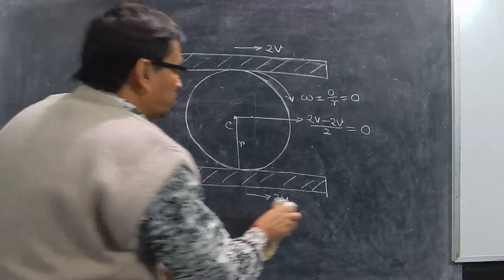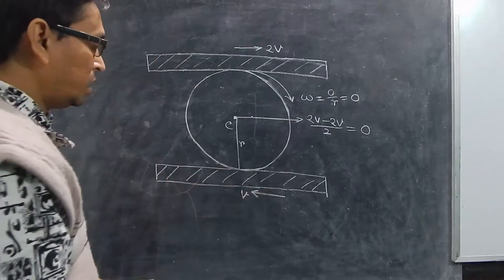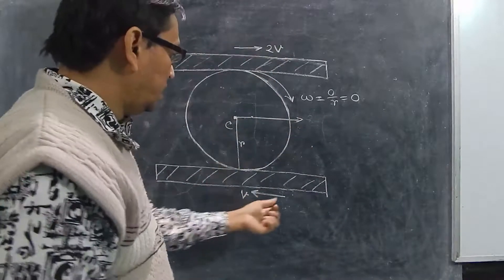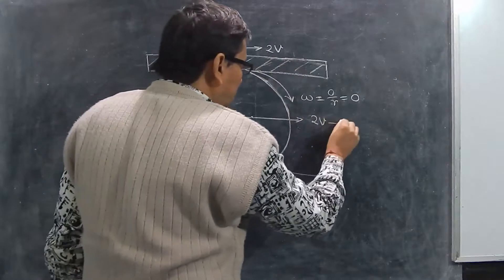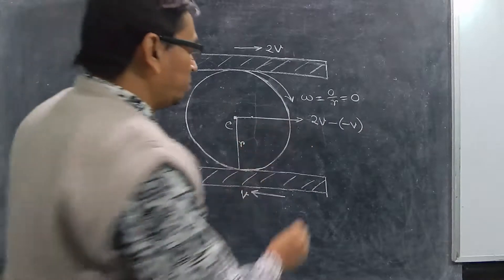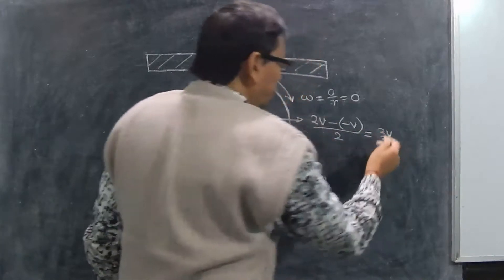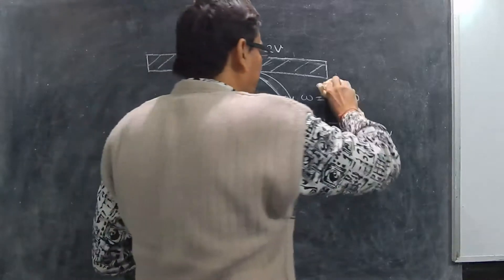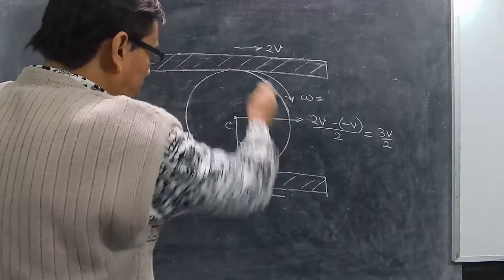Now suppose this plank is moving in the opposite direction with velocity V. You have to calculate it carefully — it is not so difficult. This plank is moving with 2V and this one with V in the opposite direction. So the relative velocity will be 2V minus (−V) — because this velocity is in the opposite direction, you take minus V — divided by 2. This gives you 3V. So once you find the velocity of the center of mass, you can find omega, which will originate from the higher velocity side, and the body will roll in that direction.